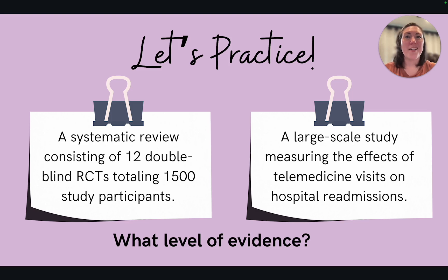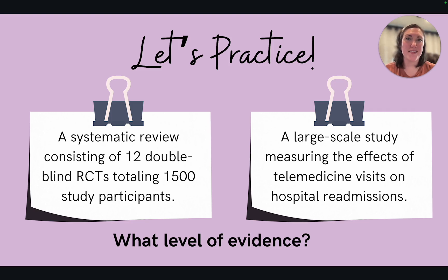Let's go over a few examples of research and decide what level of evidence they align with. Example one: a systematic review consisting of 12 double-blind RCTs totaling 1,500 participants. What level of evidence is this? Yes, level one evidence.